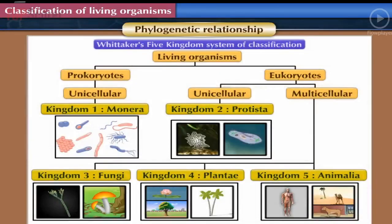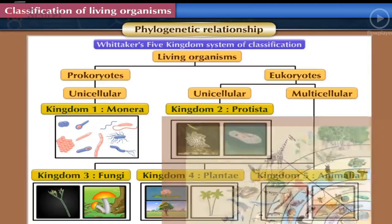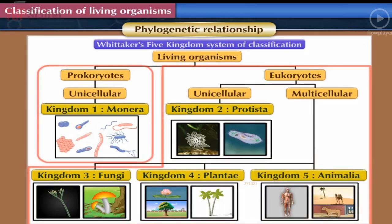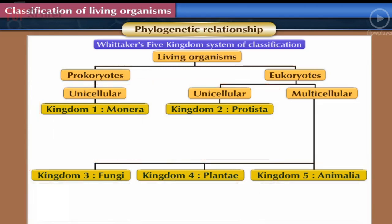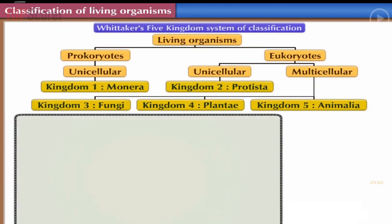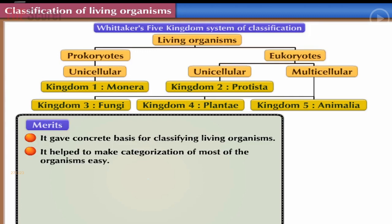Phylogenetic Relationship: Phylogenetic relationships among living organisms were also taken into consideration by Whittaker. Living organisms were arranged according to their evolutionary history; therefore, prokaryotes came before eukaryotes, and unicellular organisms came before multicellular organisms. Whittaker's five kingdom system gave a concrete basis for classifying living organisms and helped make categorization of most organisms easy.